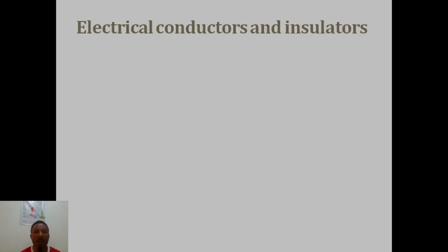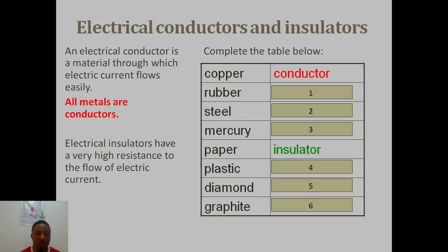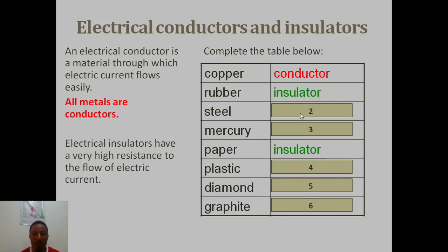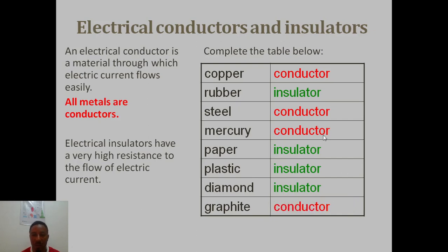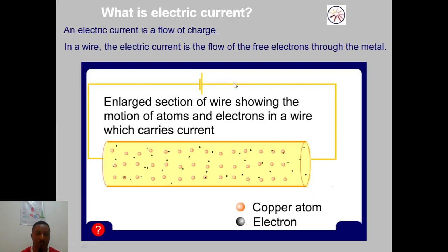Electric conductors allow current to flow while insulators don't. Let's quickly identify some: rubber — insulator; steel — conductor; mercury — conductor, even though it's a liquid; plastic — insulator; diamond — insulator; graphite — conductor. What conductors have in common is that they have free mobile electrons, while insulators don't.